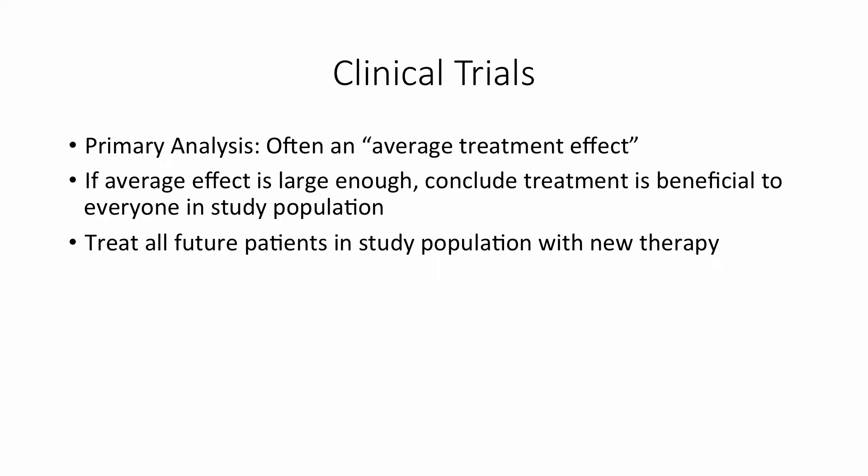In clinical trials, the primary analysis is often what I would call an average treatment effect. This is where we take an average across everyone in our study population and we conclude that the treatment is beneficial if the treatment effect is large enough. What this means is we recommend all future patients in the study population be treated with this new therapy on the premise of this large average treatment effect that we observe.